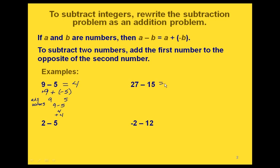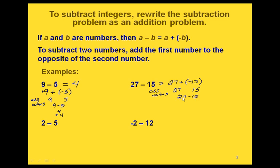Let's do the same thing with 27 minus 15. We can rewrite this as 27 plus the opposite of 15, which is negative 15. Working this out as an addition problem, our absolute values are 27 and 15. The larger is 27, so we find 27 minus 15, which gives us 12. We use the sign of the number with the larger absolute value, which is positive, so we get positive 12.